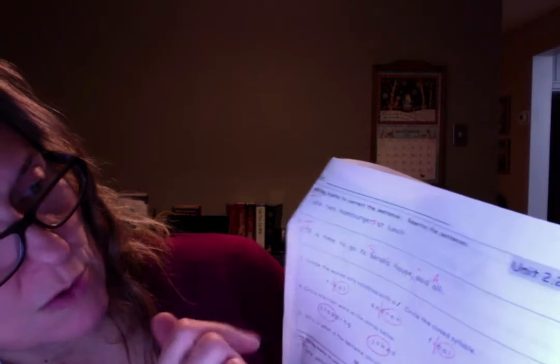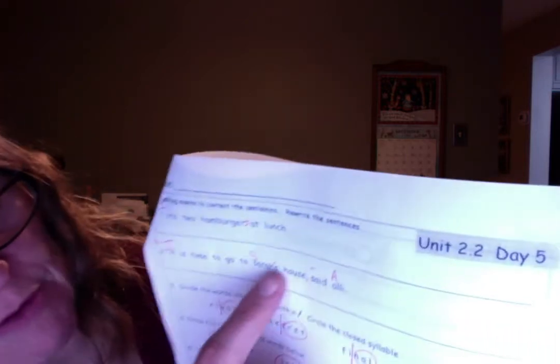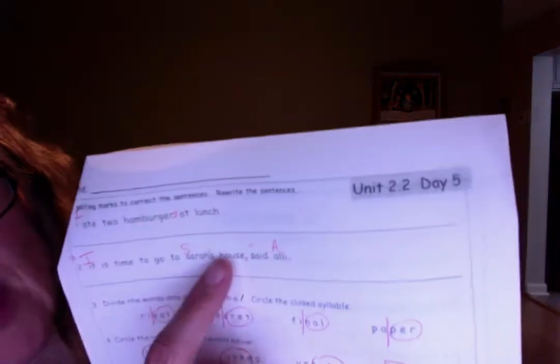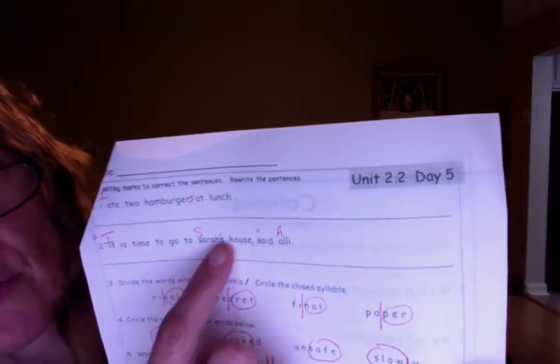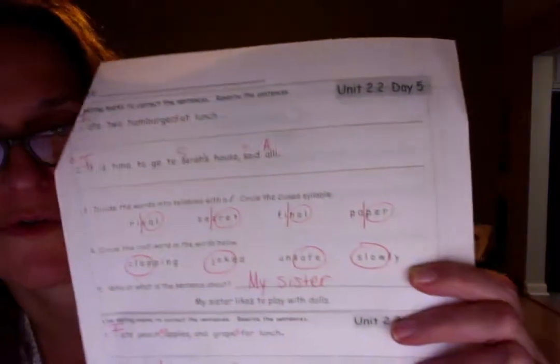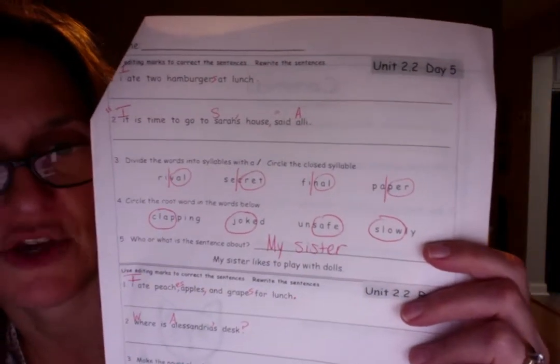It is time to go to Sarah's house, quote, end quote. And a comma before said, right? And Sarah's house needs an apostrophe S. It's her house. It belongs to her. So we need apostrophe S on the end of names that show possession.